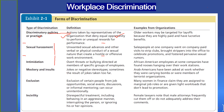The third form of discrimination is intimidation — overt threats or bullying directed at members of specific groups of employees. For example, African American employees at some companies have found nooses hanging over their work stations.